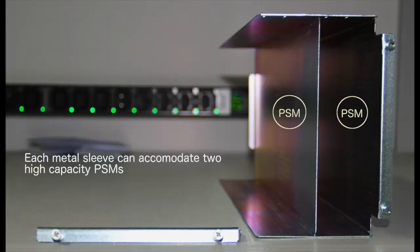The high-capacity DC and AC PSMs are smaller in size compared to the existing Delta and WYEDC PSMs. Therefore, you must install a metal sleeve in the PDU before installing the high-capacity PSM. Each metal sleeve can accommodate two PSMs.